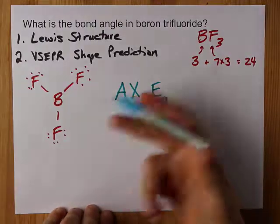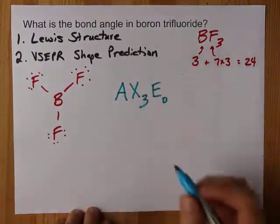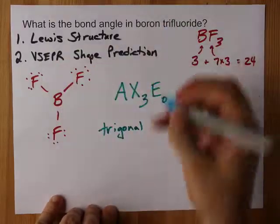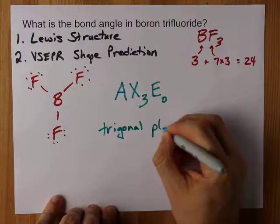Your job is to know what the shape of this is, even if you don't recognize the notation. The answer is, if you have three things attached and they're all atoms, it is called trigonal planar.